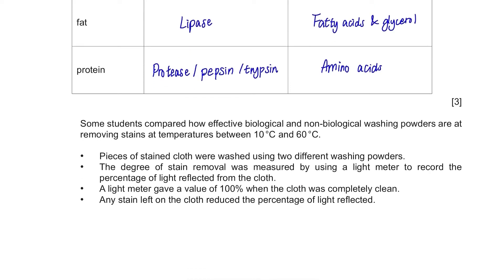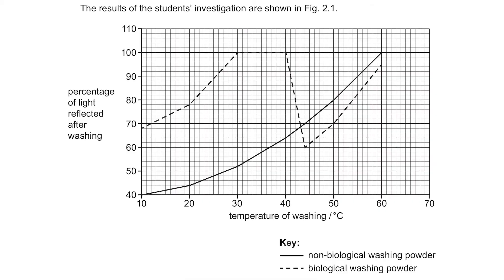Some students compared how effective biological and non-biological washing powders are at removing stains at temperatures between 10°C and 60°C. Pieces of stained clothes were washed using the two different washing powders. The degree of stain removal was measured using a light meter to record the percentage of light reflected from the clothes — a value of 100% means completely clean. The results are shown in figure 2.1, with temperature of washing on the x-axis and percentage of light reflected on the y-axis, showing two graphs for biological and non-biological washing powders.